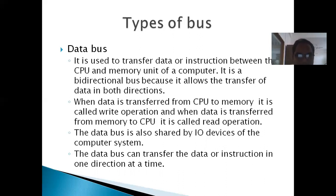First one is data bus. It is used to transfer data or instruction between the CPU and the memory unit of a computer. It is a bidirectional bus because it allows the transfer of data in both directions.